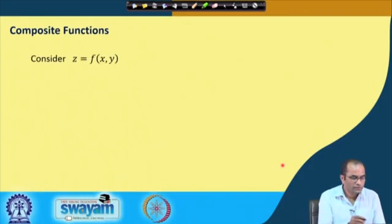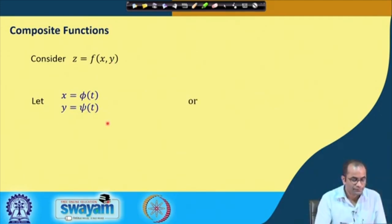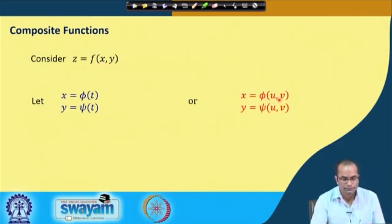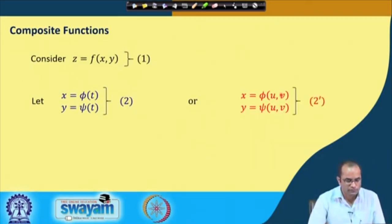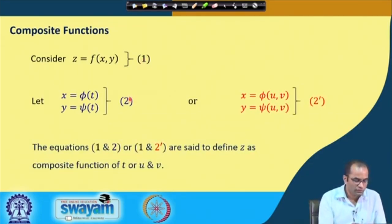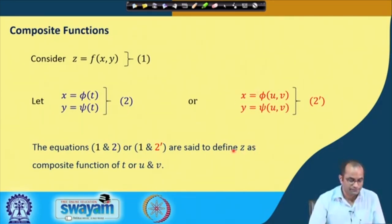What are composite functions? If we consider z equal to a function f of two variables x and y, and x is a function φ of t, and y is also a function of t denoted by ψ — or more generally, x and y are functions of two variables u and v — then equations 1 and 2 together are said to define z as a composite function of t, or a composite function of u and v.